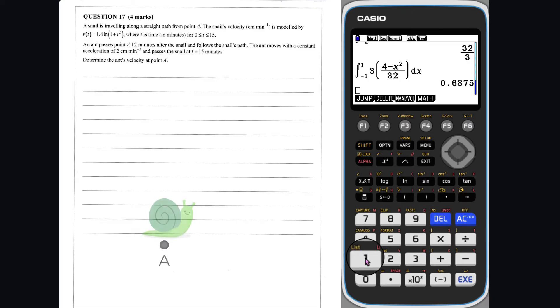Question 17. A snail is travelling along a straight line from point A with a velocity of 1.4 times ln of 1 plus t squared, where t is the time travelled in minutes. An ant passes point A 12 minutes after the snail. The ant travels with a constant acceleration of 2 centimeters per second. It passes the snail at t equals 15. We need to determine the ant's velocity at point A.